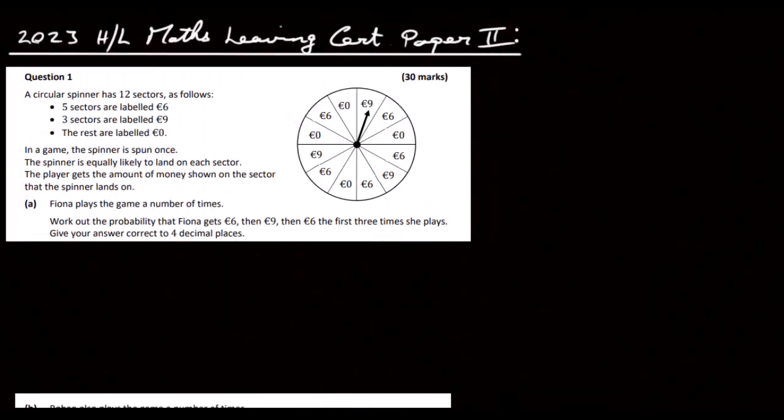Okay, so this is the 2023 High Level Maths Leaving Cert Paper 2, Question 1. A circular spinner has 12 sections as follows: five sectors are labeled 6 euros, three are labeled 9 euros, and the rest are labeled 0. In a game, the spinner is spun once.